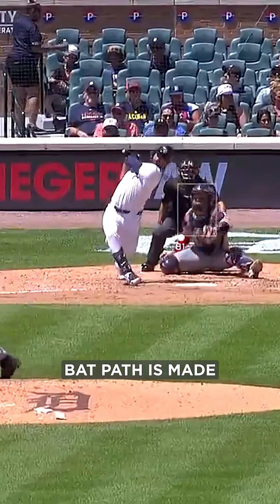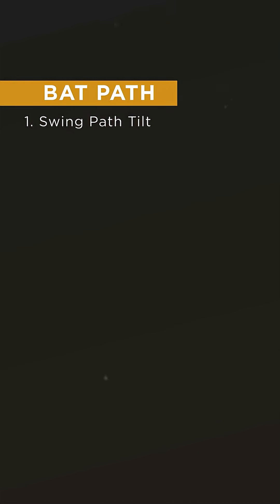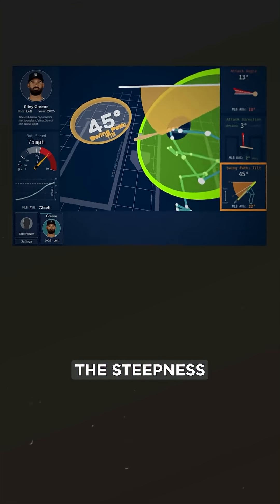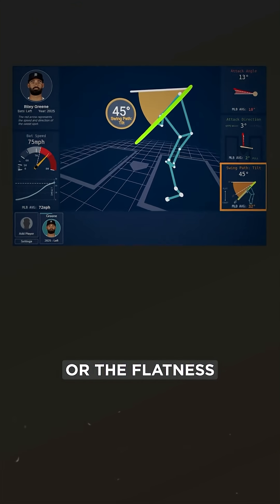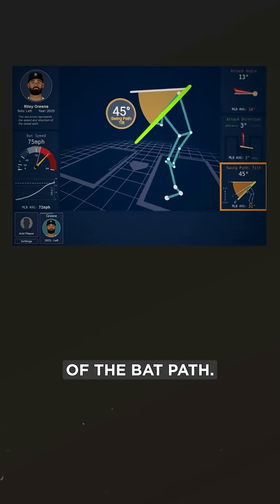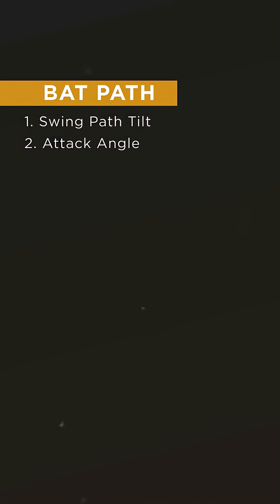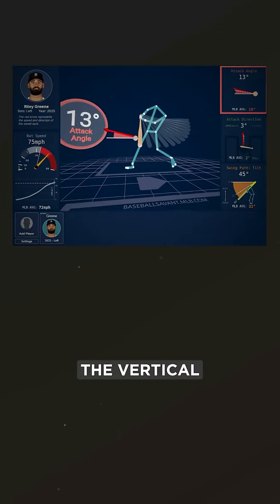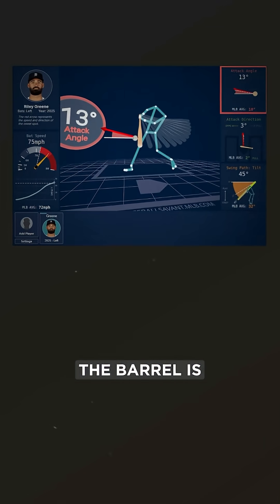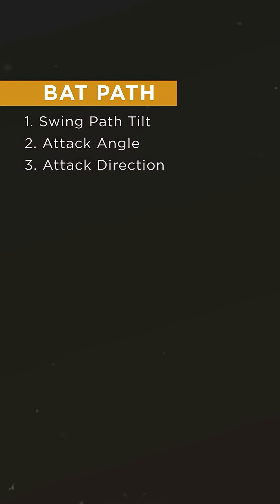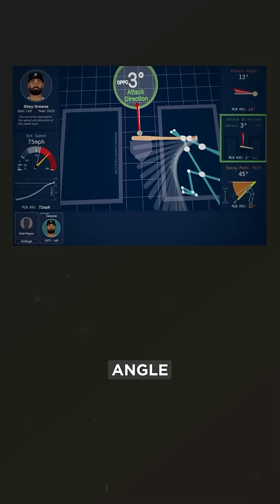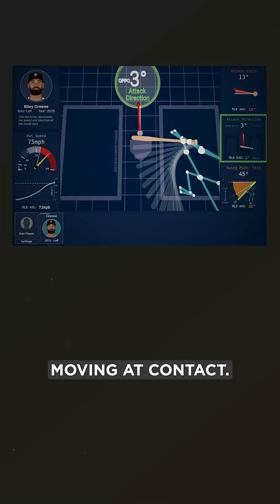Bat path is made up of three things. You've got swing path tilt, which measures the steepness or flatness of the bat path. You've got attack angle, which is measuring the vertical direction the barrel is moving at contact. And then you've got attack direction, which measures the horizontal angle the barrel is moving at contact.